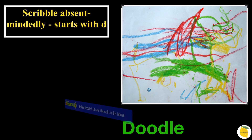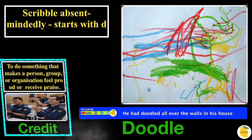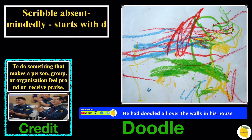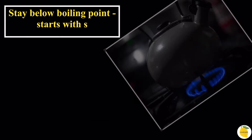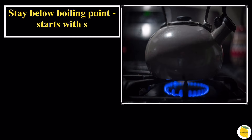The word is 'doodle', and the sentence is: he had doodles all over the walls in his house. Let's recall the previous slide, which is 'credit'.